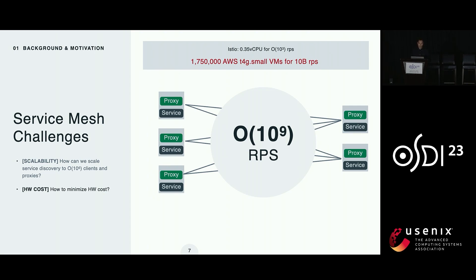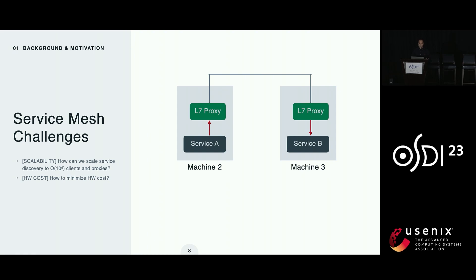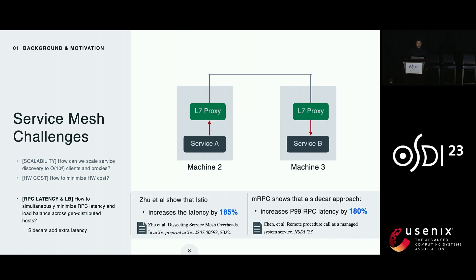We give an example with some of the advertised measurements of Istio, which uses a sidecar approach. We show that if we want to handle 1,000 requests per second, we're going to need around 0.35 virtual CPUs. So if we do the math for 10 billion requests per second, that comes down to needing 1.75 million small AWS VMs which use two virtual CPUs each. Minimizing the hardware cost is another major challenge. Sidecar approaches also add extra routing tail latencies due to the added message marshalling and un-marshalling between the client and the proxy, and measurements from prior work evidence that overhead.